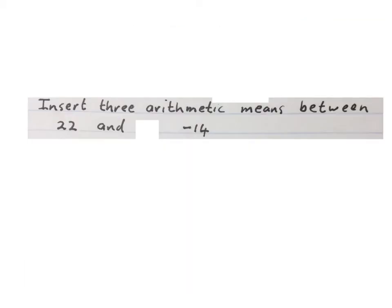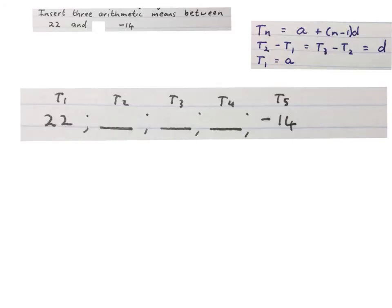The next question reads: insert three arithmetic means between 22 and minus 14. First we set up the sequence. I take my 22 as my first term, set up three spaces in between, then minus 14 becomes my fifth term.